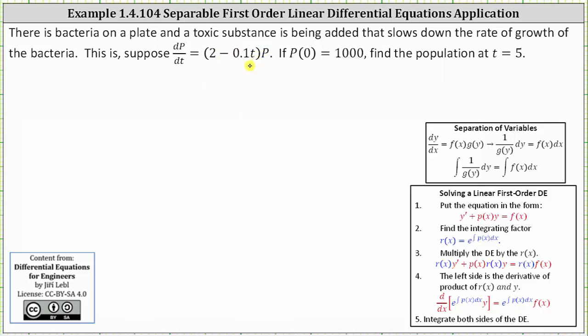This means you want all of the p's on the left and the t's on the right. Let's first multiply both sides of the equation by 1/p. Notice on the right, p times 1/p will simplify to 1. So multiplying both sides by 1/p, we have (1/p)(dp/dt) equals the quantity (2 - 0.1t).